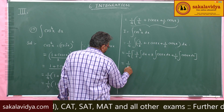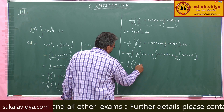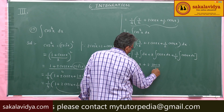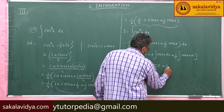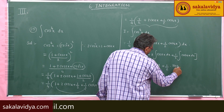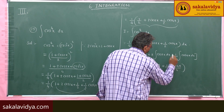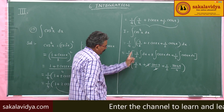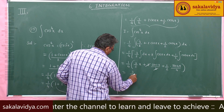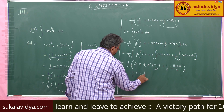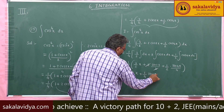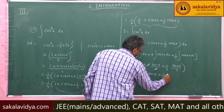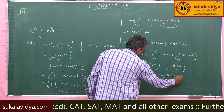This gives 1/4 times (3/2 · x plus 2 · sin 2x by 2 plus 1/2 · sin 4x by 4). After simplification — 2 and 2 cancel, and bringing 1/4 inside — the final answer is 3x/8 plus sin 2x/4 plus sin 4x/32 plus constant of integration.